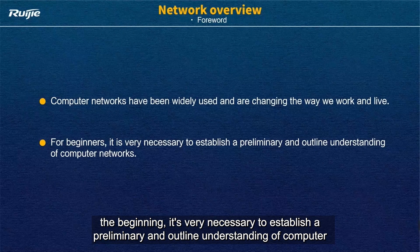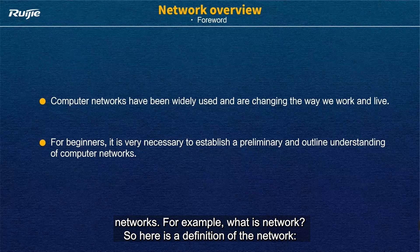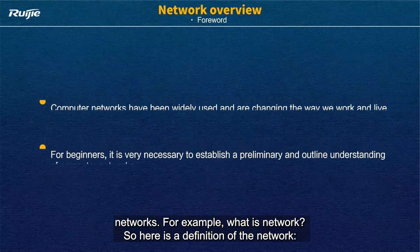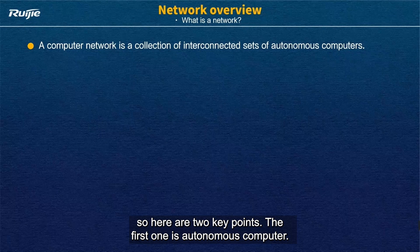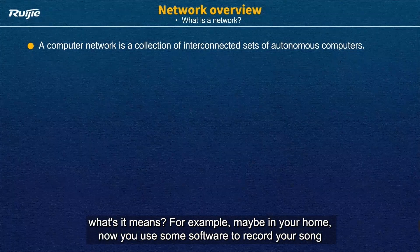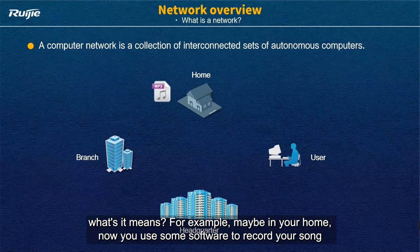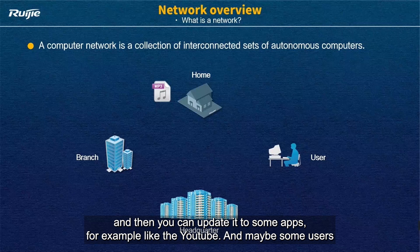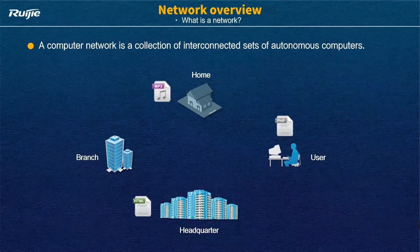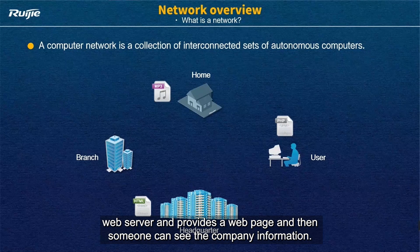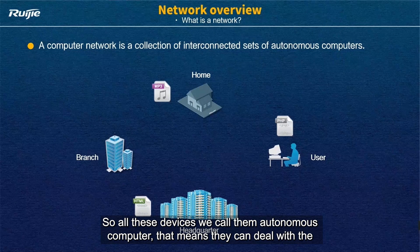For the beginner, it is very necessary to establish a preliminary and outline understanding of computer networks. For example, what is network? Here is the definition: a computer network is a collection of interconnected sets of autonomous computers. There are two key points. The first one is autonomous computer. For example, maybe in your home you use some software to record your song and upload it to apps like YouTube. Maybe some users use software like PHP to build a game. And in a company, we might deploy a web server to provide a web page so people can see the company information. So all these devices we call autonomous computers.